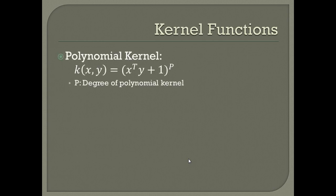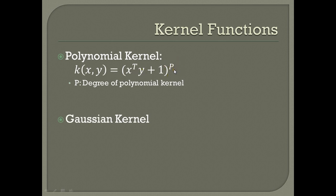In this project, two different kernel functions have been used. The first is the polynomial kernel, represented as K(x, y) = (x transpose y + 1) raised to the power P, where P is the degree of the polynomial kernel, which controls the performance of the polynomial kernel PCA.